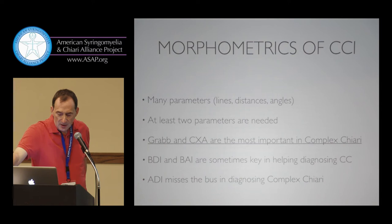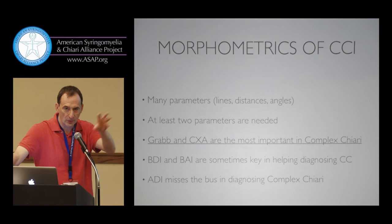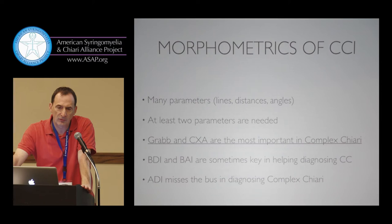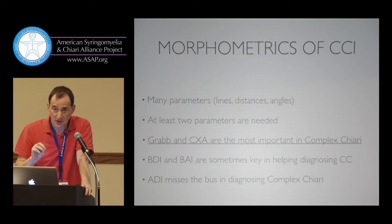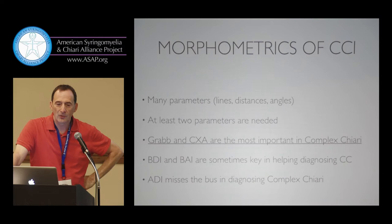What are the morphometrics of cranioservical instability? Morphometrics are a particular set of parameters — lines, distances, or angles — that we use to quantify how normal, borderline, or pathological a structure is. The mainstay is that you have to look at this complex joint with at least two parameters; one is not enough. I always use the example of the flounder: from one angle it looks like a big fish; from another it looks very puny. You need two complementary points of view.